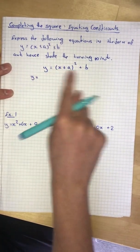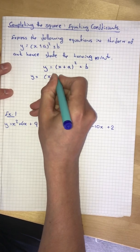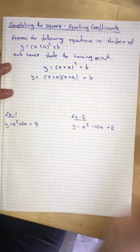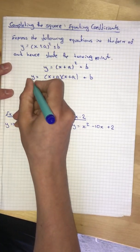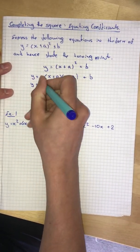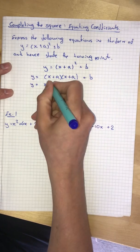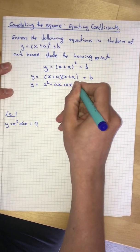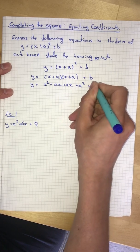If I break out this bracket I'm going to get x plus a x plus a plus b. Now let's multiply that out. We get x squared plus ax plus ax plus a squared plus b.